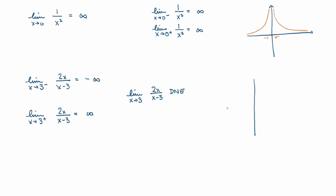Let's sketch the graph to confirm. The function 2x/(x−3) has a vertical line at x = 3. The function looks like this — going through the origin — and as we approach 3 from the left, it goes down to minus infinity, while approaching from the right, it becomes arbitrarily large, going to plus infinity.